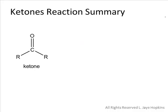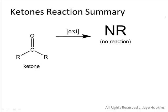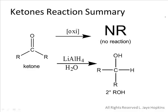To summarize ketone reactions: first, attempting to oxidize a ketone with any oxidizing agent, including chromate, produces no reaction. Second, reducing a ketone with lithium aluminum hydride in the presence of water produces a secondary alcohol. Which specific secondary alcohol depends on what R groups were originally present on the ketone.